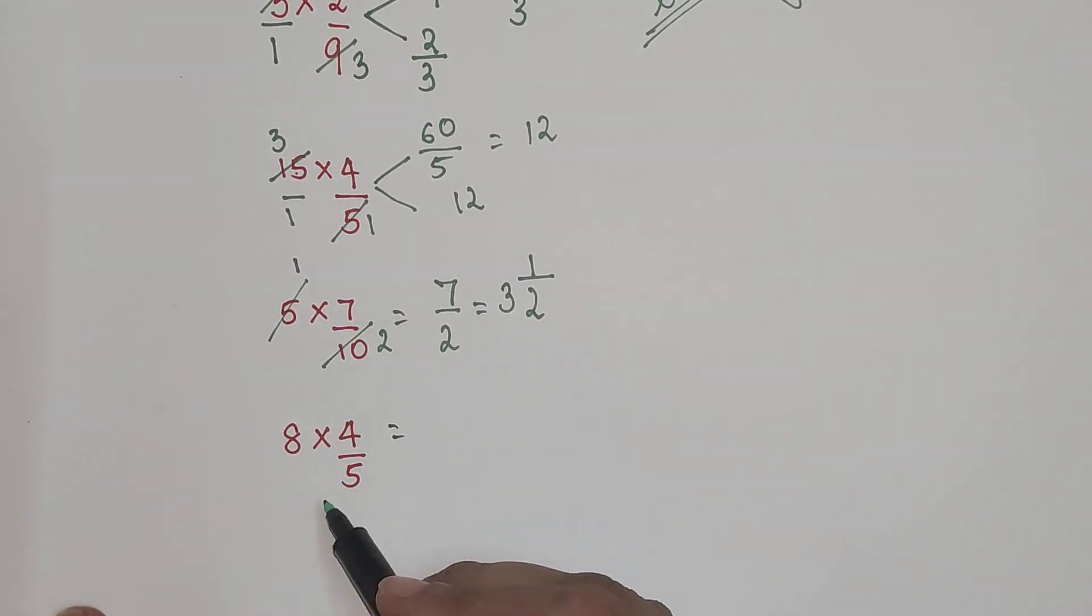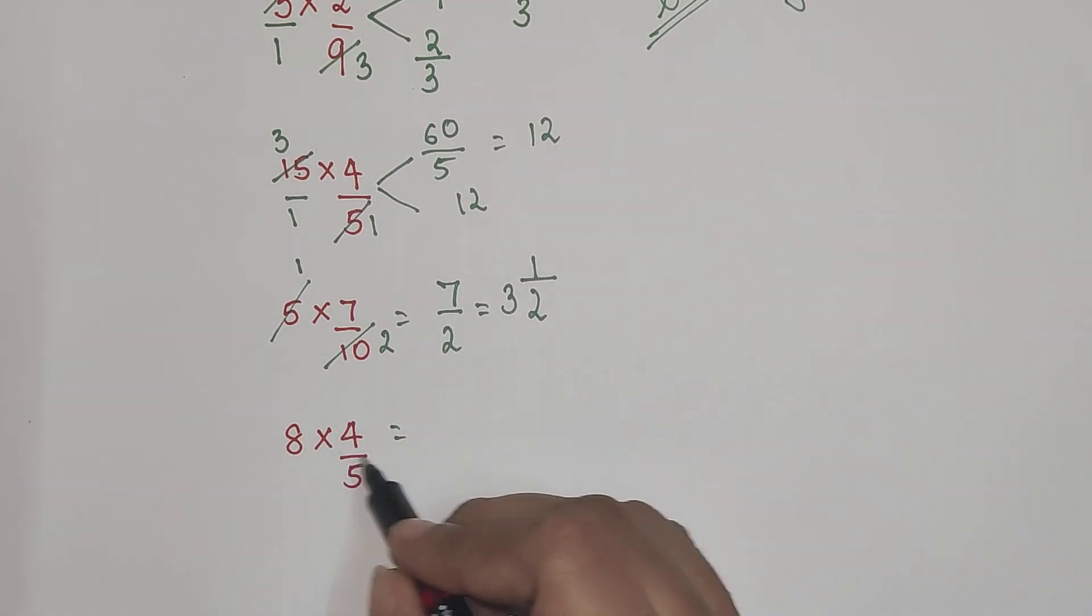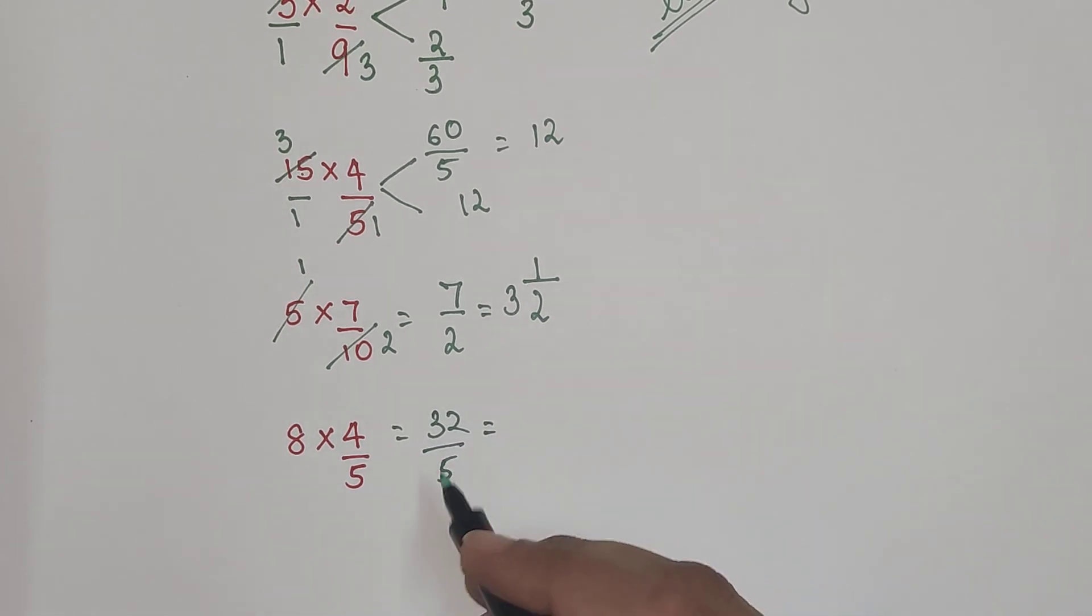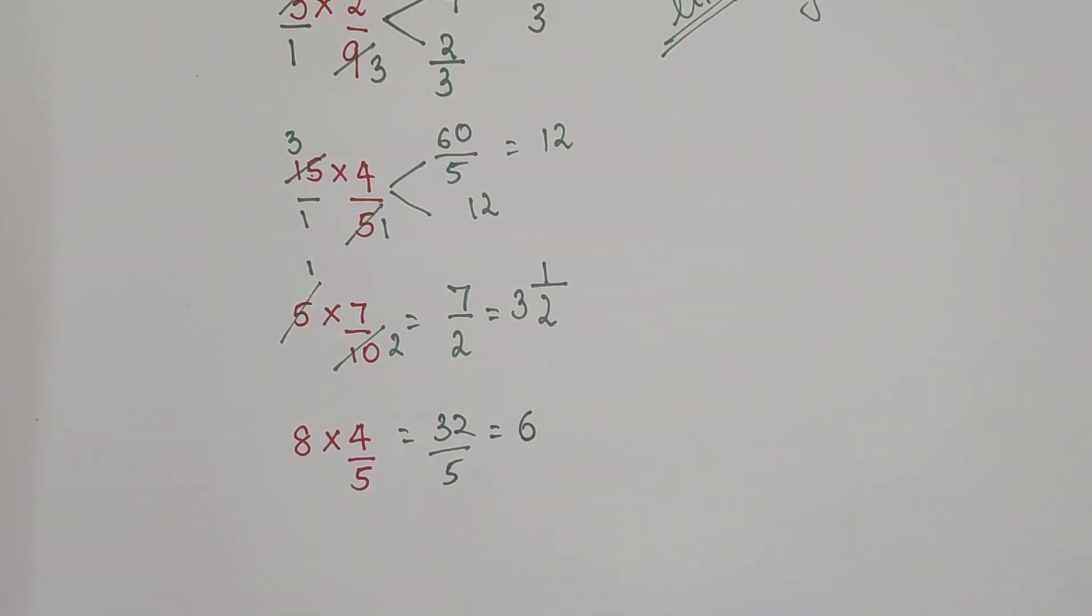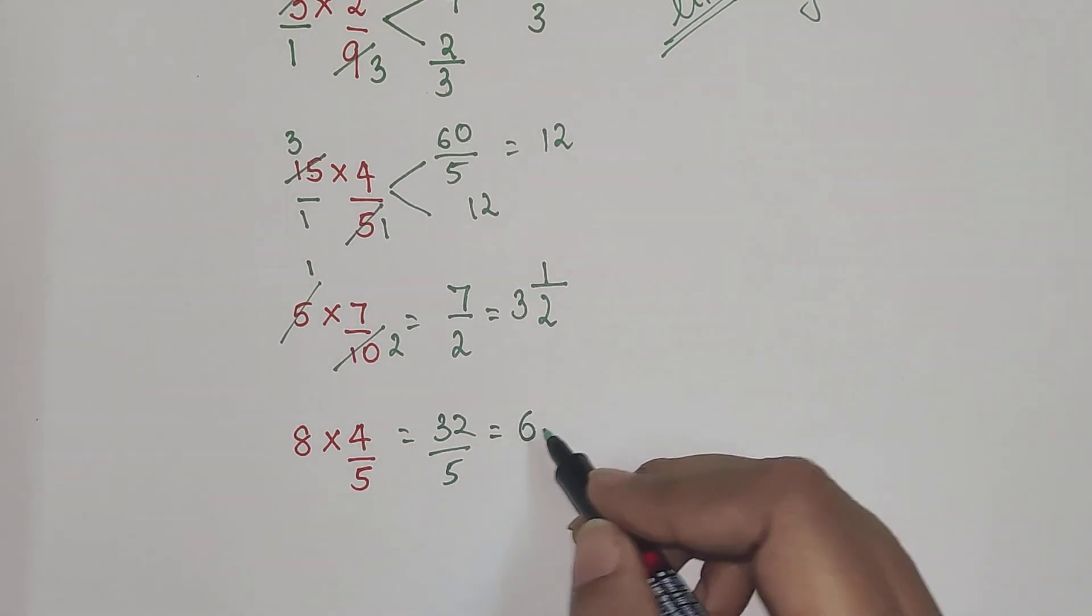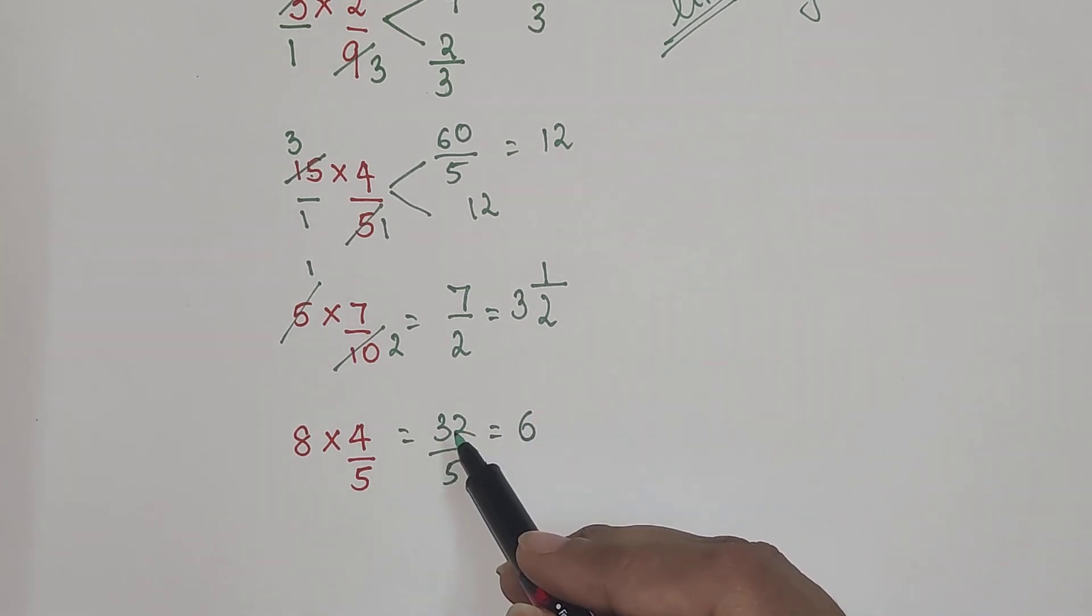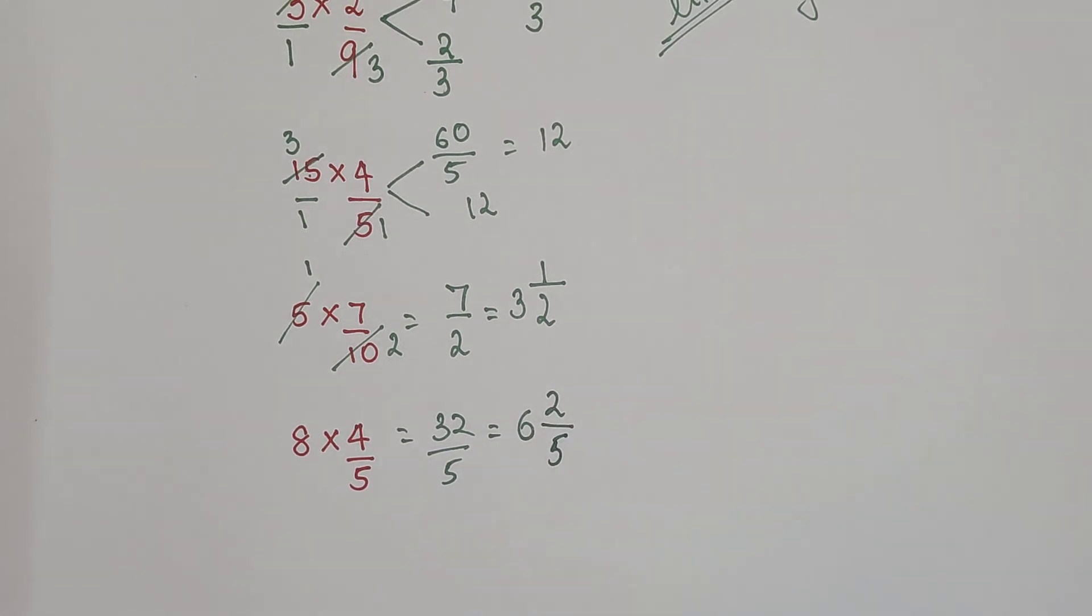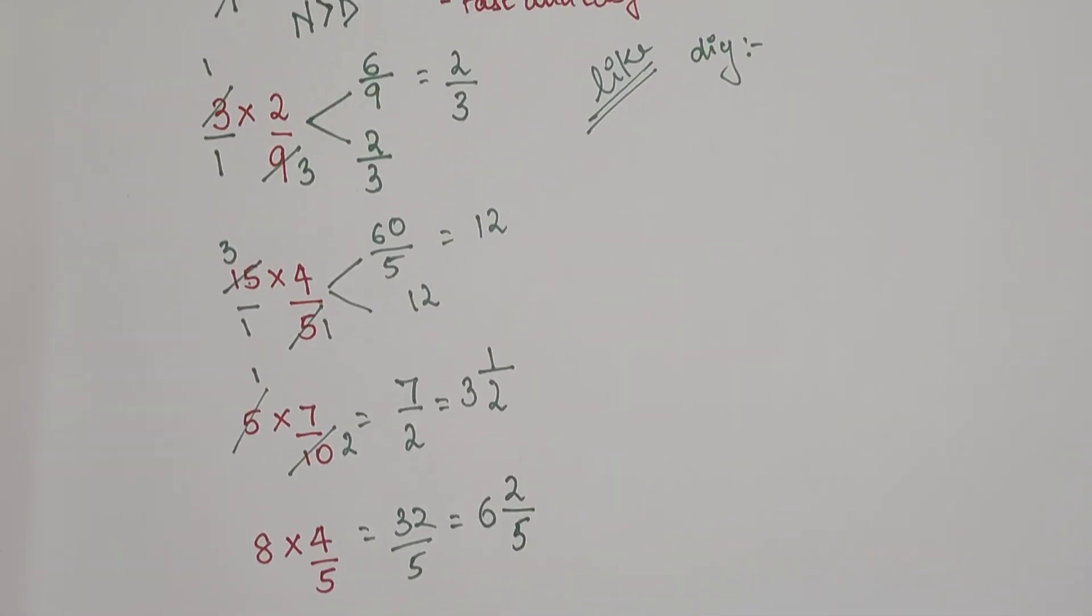Now looking over here, if you see nothing can be cancelled, not up and down not even diagonally we can cancel anything. So in that case what happens is you directly multiply. So we have 32 upon 5. Again this is an improper fraction because 32 is much greater than 5. So now what should be the quotient when you divide 32 by 5 is nothing but 6, because 6 into 5 is 30. So the remainder is nothing but 2 because you take 30 out of 32 you get the remainder as 2. And your divisor carries on to be 5. So this is your answer for 8 into 4 upon 5.